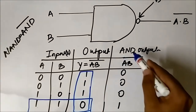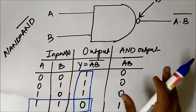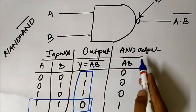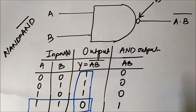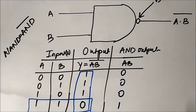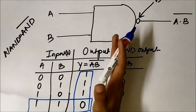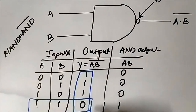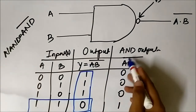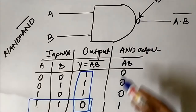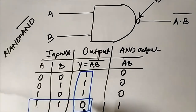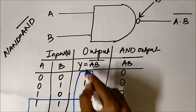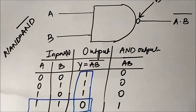Please do not confuse with the AND output column — that is included only to help understand the derivation. The actual output of the NAND gate is the complement of the AND output because of the NOT gate or inverter represented by the bubble. So in the NAND gate, when both inputs are logic 1 the output will be logic 0, and in all other cases the output will be high.